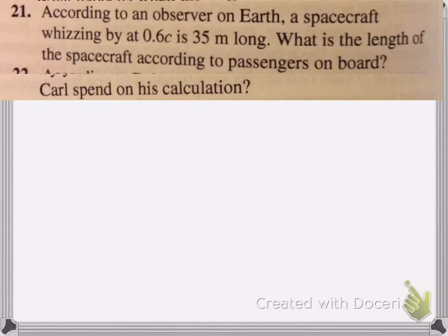It says, according to the observer on Earth, a spacecraft is whizzing by at 0.6c. That is 35 meters long. What is the length of the spacecraft according to the passengers on board? So, the problem is going to go away. You're going to see another problem there instead. It's incorrect, but I edited this incorrectly, so my bad.